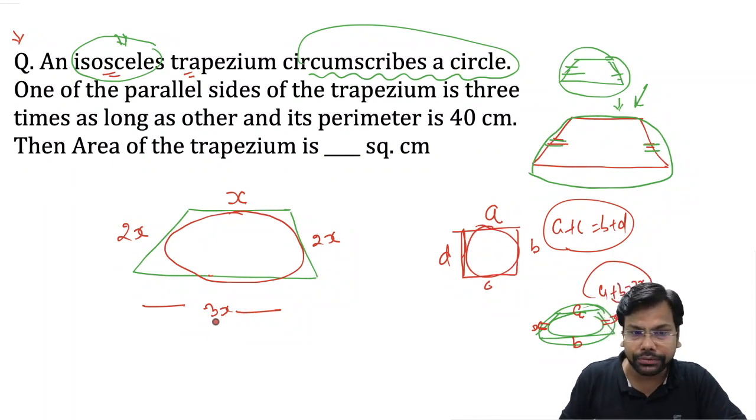Let's solve this question. We have x, 3x, 2x, 2x. If you look at summation, this will be 4x, the perimeter will be 8x. 8x equals 40, so x is 5.